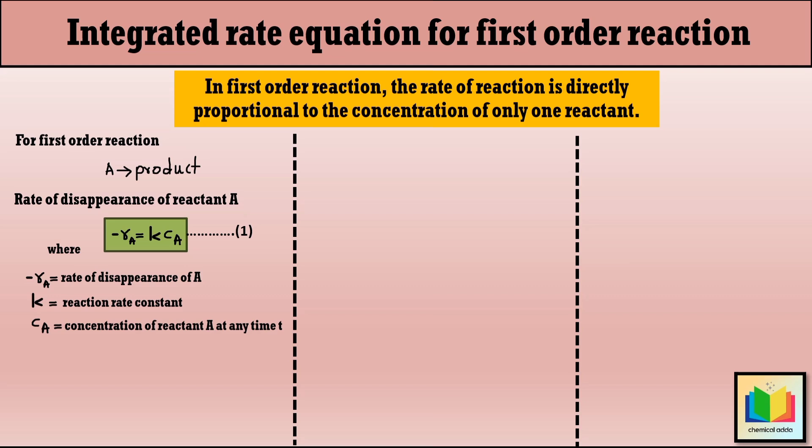Since we are determining the integrated rate equation for a first-order reaction in a variable volume batch reactor, it's important to consider the changes in volume during the reaction, as it affects the concentration of the reactants. So let's start by writing the general equation for the rate of disappearance of A for a variable volume batch reactor.